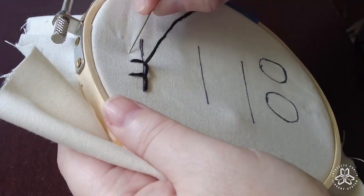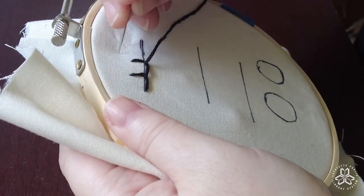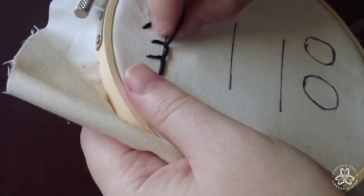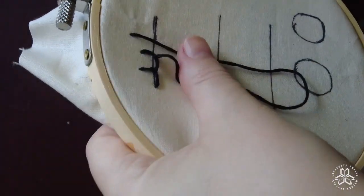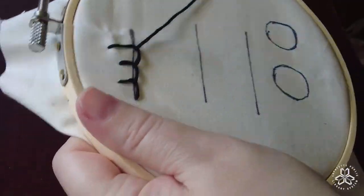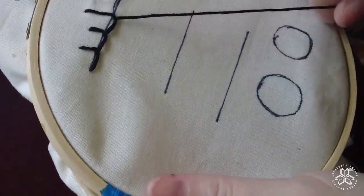And this can be both a decorative stitch and a functional stitch. It's called the blanket stitch because it's often used to finish the edges of blankets. But it could also just simply be decorative.